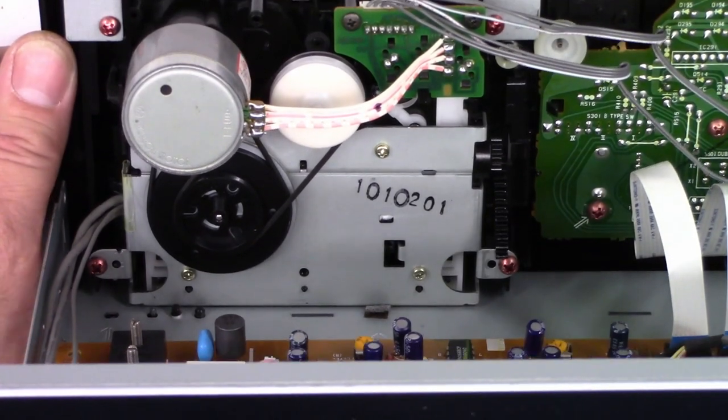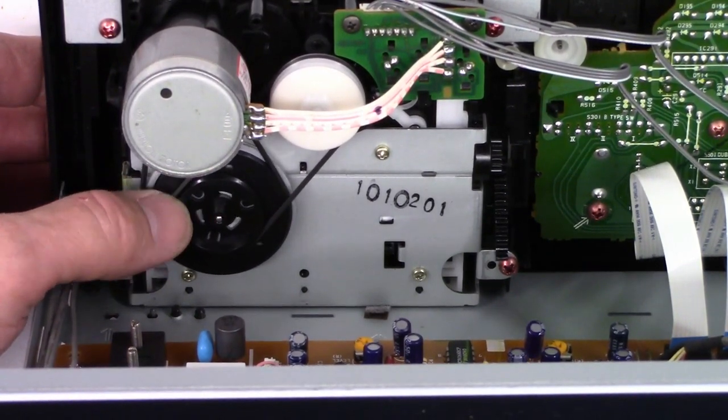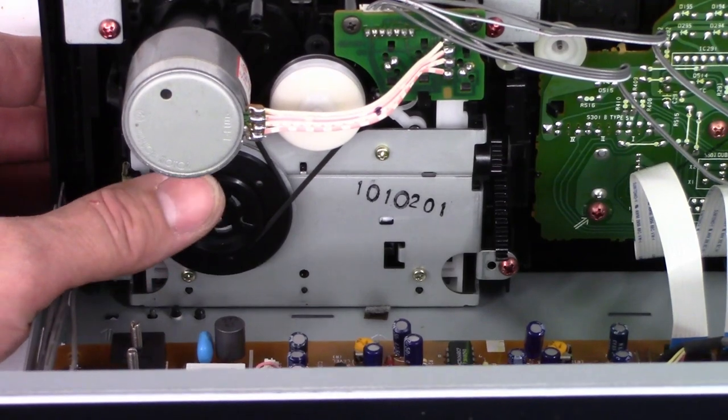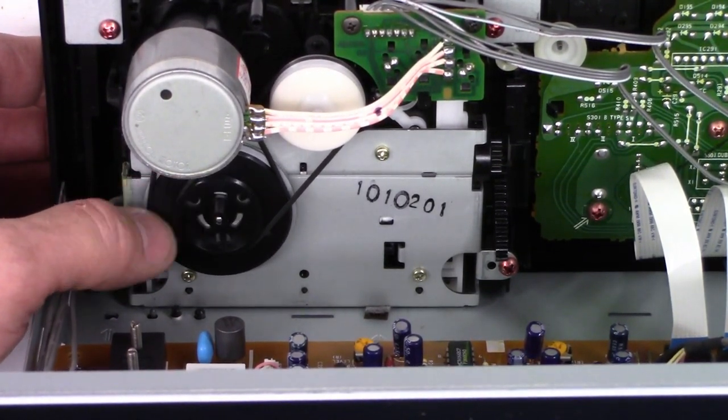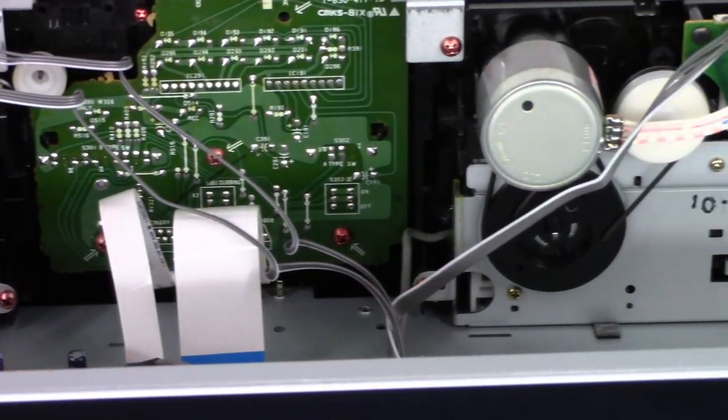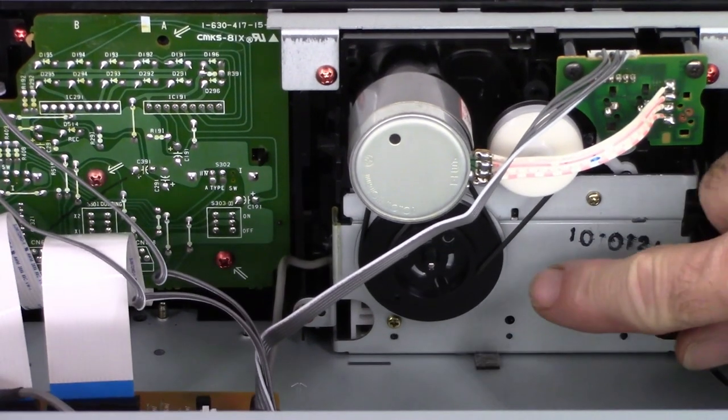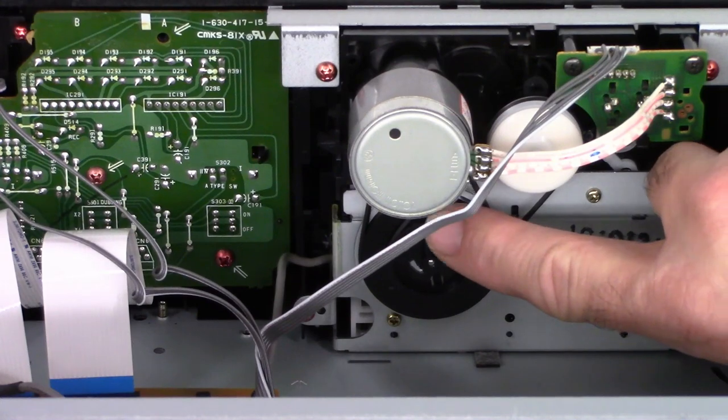So yeah, here's one of the decks, and if I just turn the flywheel, look at that belt, how loose it is on there. So I'm going to say that's going to be a major problem because that belt shouldn't be that loose. Let's take a look at the other deck, probably in the same scenario, same situation. Oh yeah, very bad.